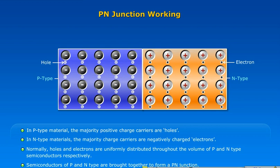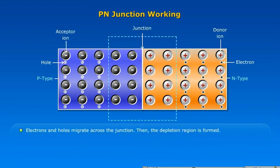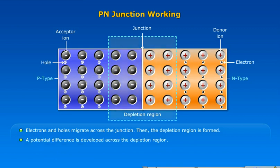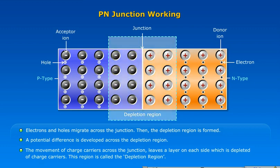When semiconductors of P and N-type are brought together, electrons and holes migrate across the junction. Then the depletion layer is formed, and a potential difference is developed across the depletion layer. The movement of charged carriers across the junction leaves a layer on each side which is depleted of charged carriers. This region is called the depletion region.